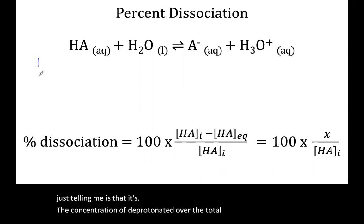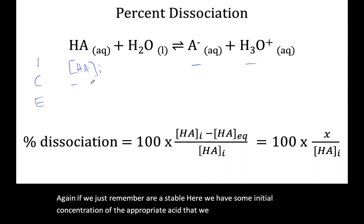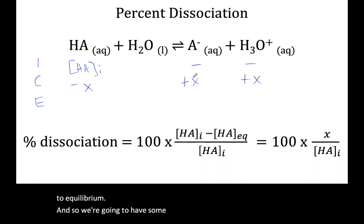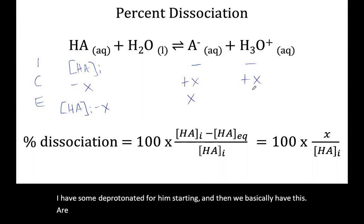If we just remember our ICE table here, we have some initial concentration of the protonated acid that we start with. We allow it to go to equilibrium, and so we're going to have some deprotonated form starting. And then we basically have our equilibrium concentration of HA at equilibrium.